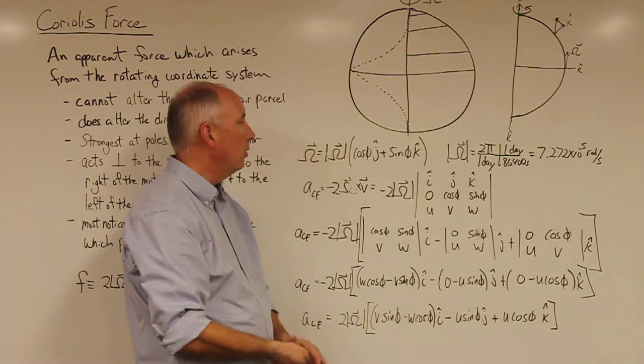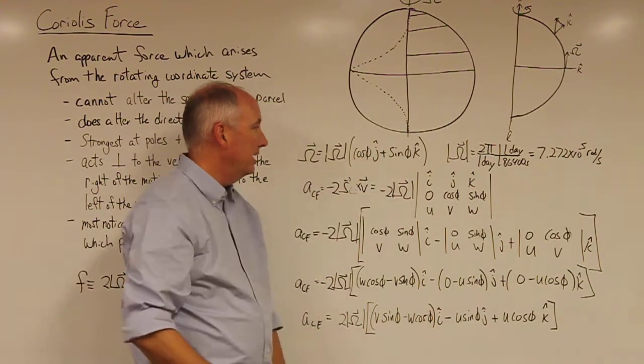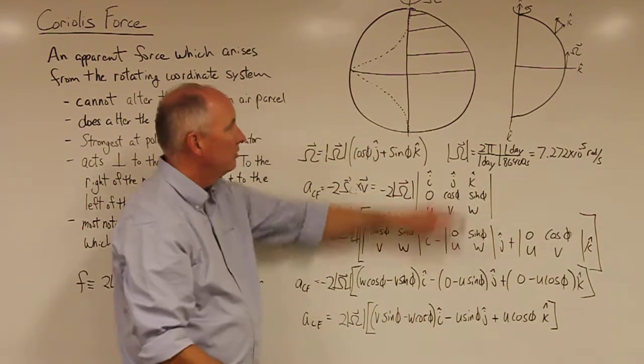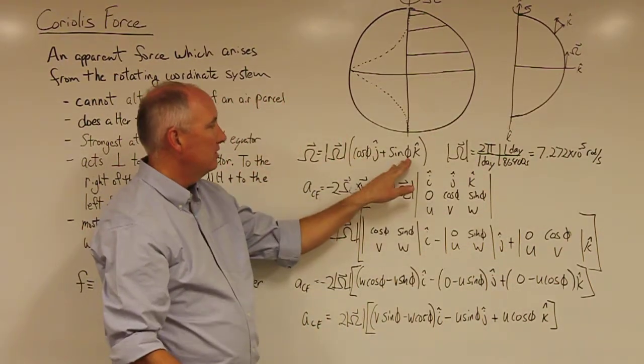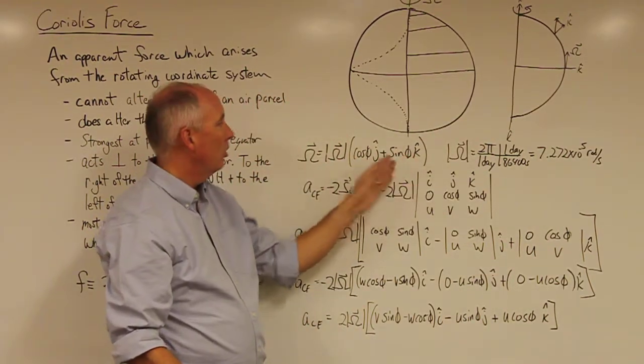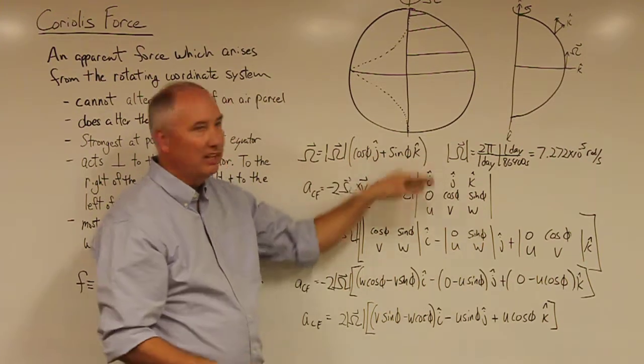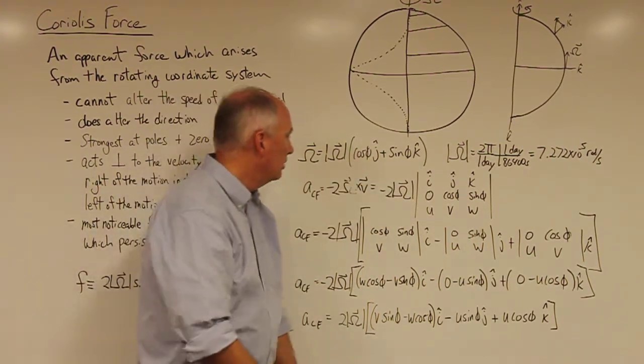So when the latitude is zero at the equator, the j-term dominates, it goes to one, and that's correct over here. And when you're at the pole, the sine φ term dominates, and so all of the angular velocity is in the k-hat direction.